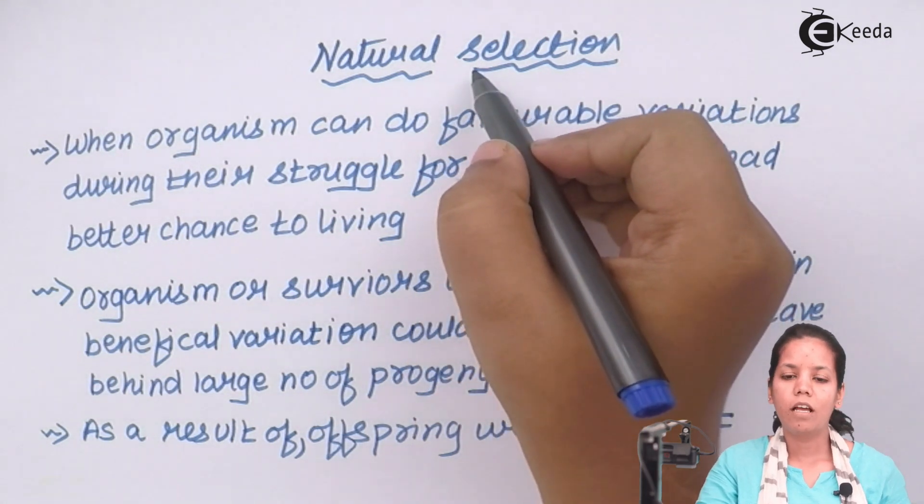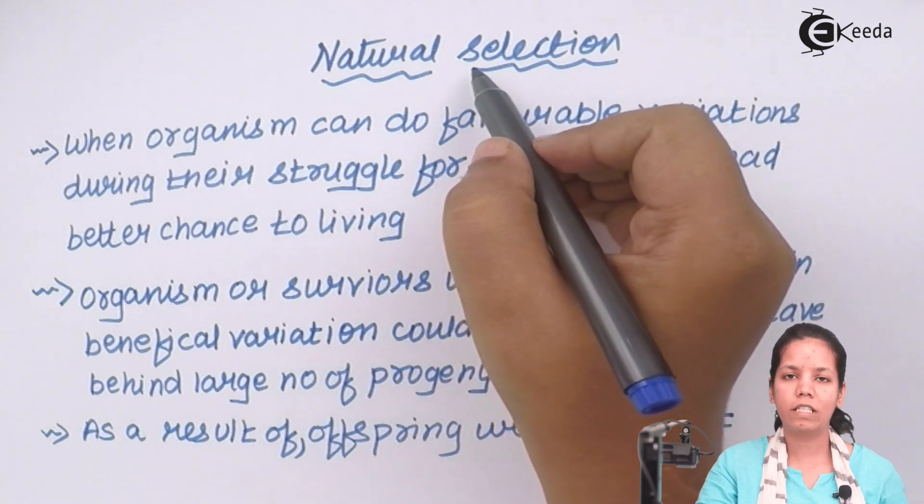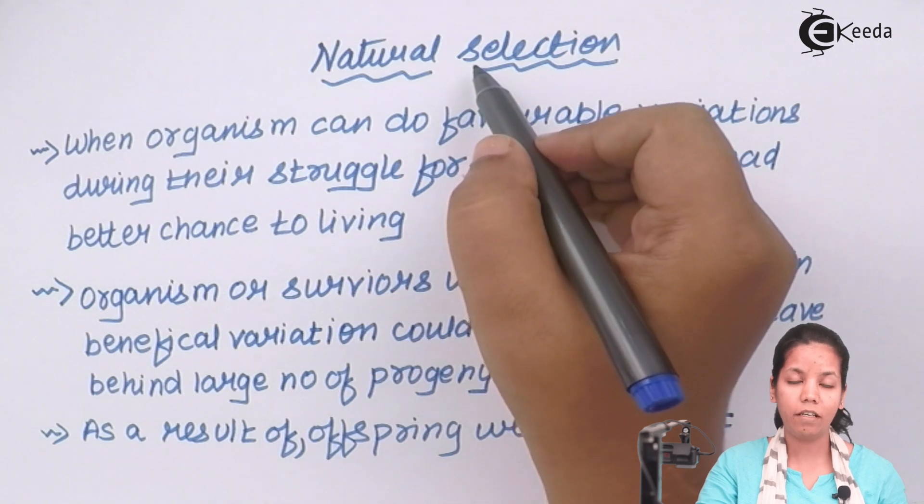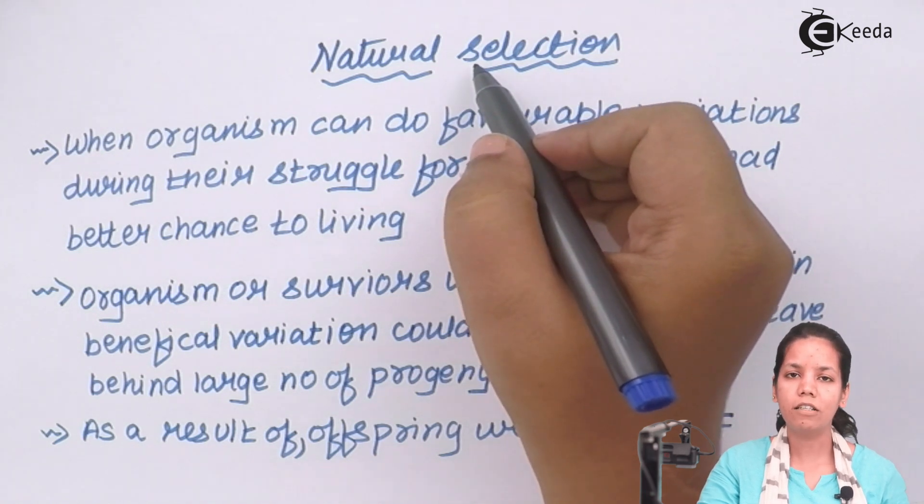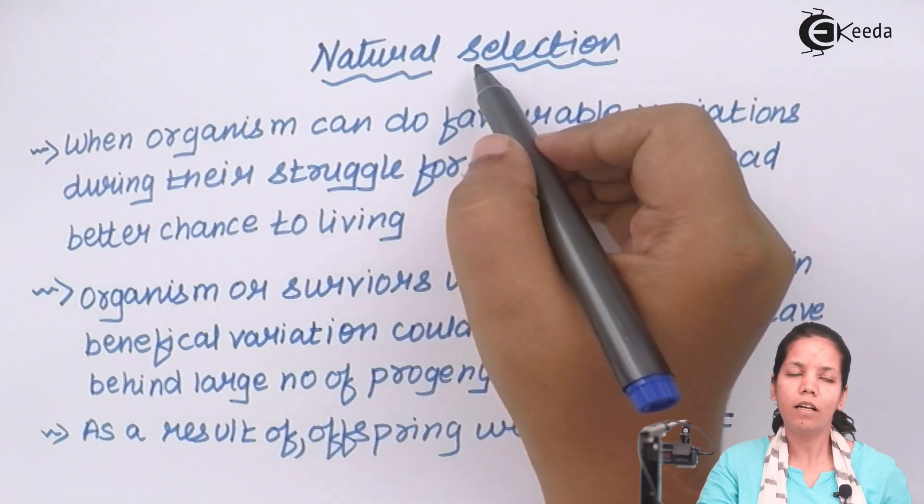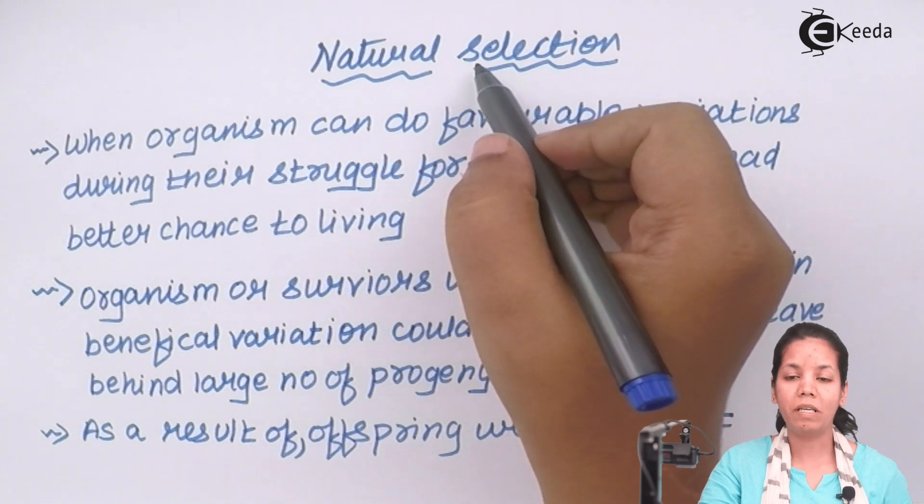Natural selection, now this phenomenon of natural selection was given by Darwin and Herbert Spencer termed or coined this term survival of the fittest. Both means same.